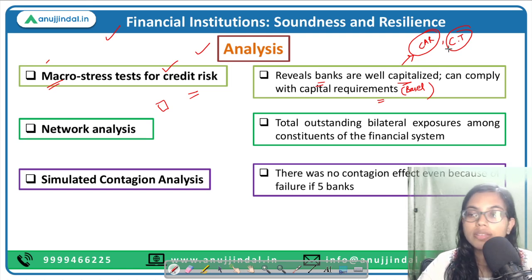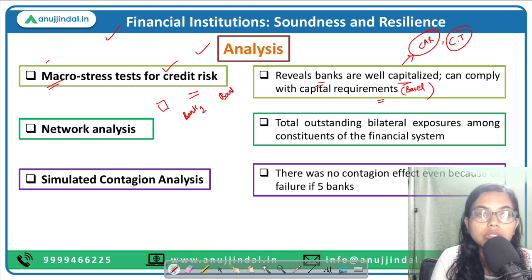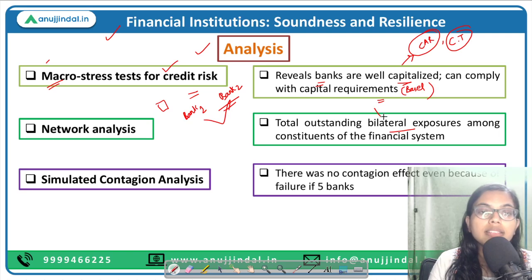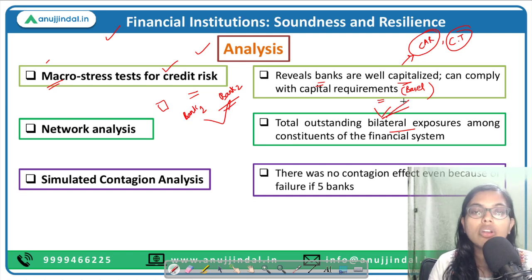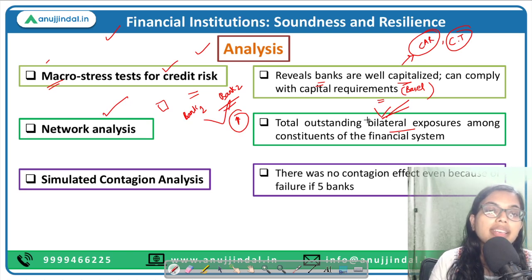The Network Analysis indicates the total outstanding bilateral exposures between the constituents of the financial system — for example between Bank 1 and Bank 2, what is their bilateral exposure. This exposure can be within banks, within NBFCs, between banks and NBFCs, within the insurance sector, or within the pension sector. For scheduled commercial banks, the share has been increasing and is the largest — scheduled commercial banks have the highest contribution in bilateral exposure.